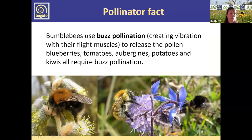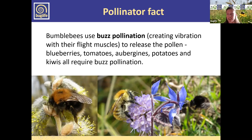Bumblebees are really important pollinators of both wildflowers and crops. Hoverflies, other flies, and solitary bees are also important, but bumblebees are very effective pollinators. They have this amazing thing called buzz pollination — the vibration of their bodies dislodges pollen from some plant species, such as potatoes, tomatoes, and blueberries — which other insects can't do. So bumblebees are essential for the pollination of particular plants.